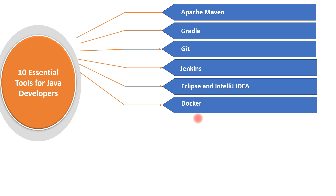Next is Docker — my favorite container tool for deploying Java applications. Docker is an essential tool for Java developers working on enterprise application development. It is a container platform that helps build, manage, and secure traditional applications as well as microservices. Docker allows you to build, test, and deploy applications quickly. If you're planning to develop and deploy applications for the cloud, Docker is an essential tool to learn.